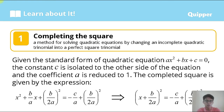Completing the square is a method for solving quadratic equations by changing an incomplete quadratic trinomial into a perfect square trinomial.